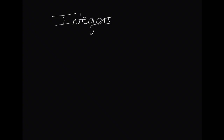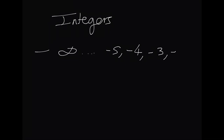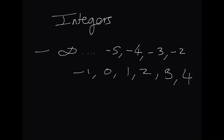The next type of numbers are integers. Integers are essentially any type of number and we go from minus infinity — the largest negative number — minus 5, minus 4, minus 3, minus 2, minus 1, 0, then positive 1, positive 2, positive 3, positive 4 and so on. So those are integers.